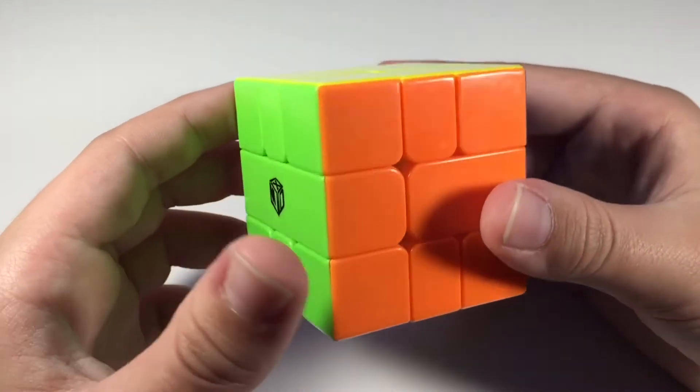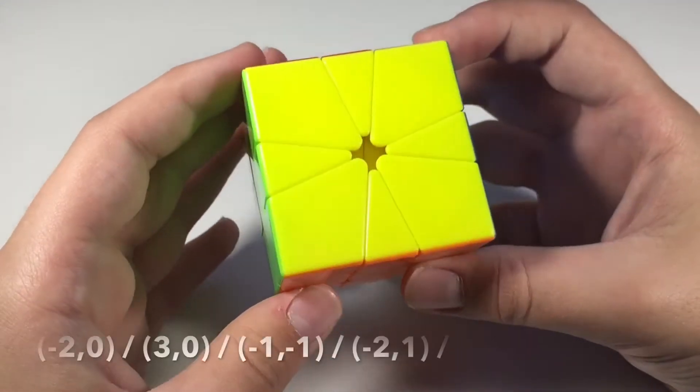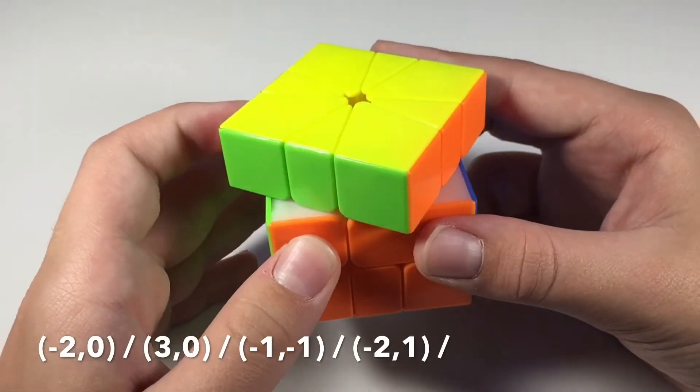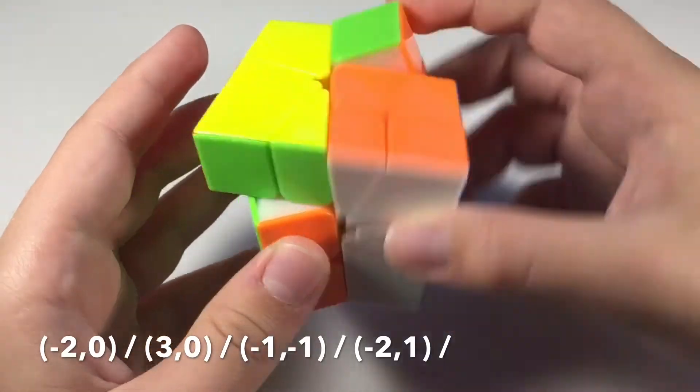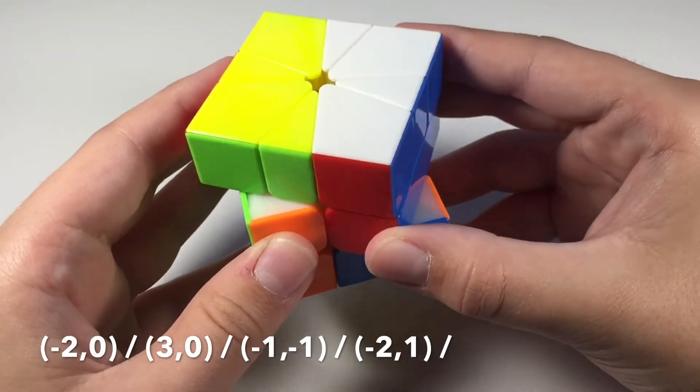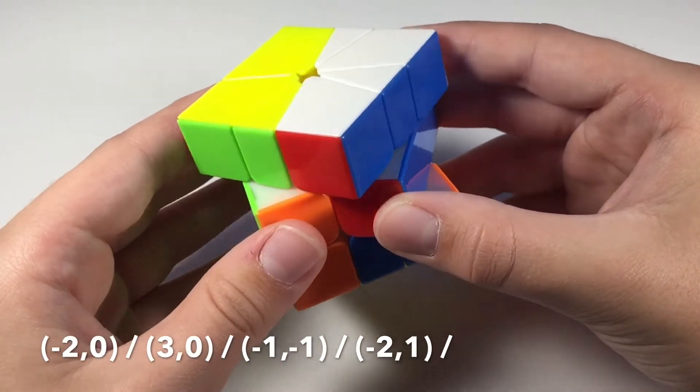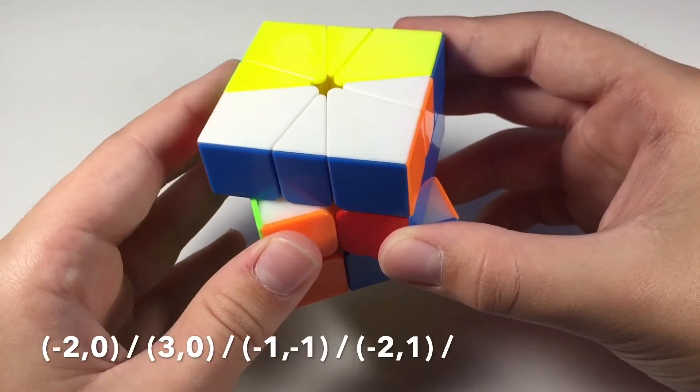So starting with negative 2, 0, that would look like negative 1, negative 2, then slash 3, 0: 1, 2, 3.